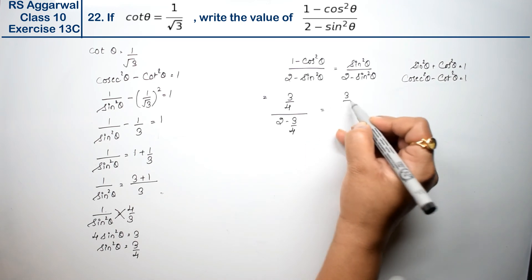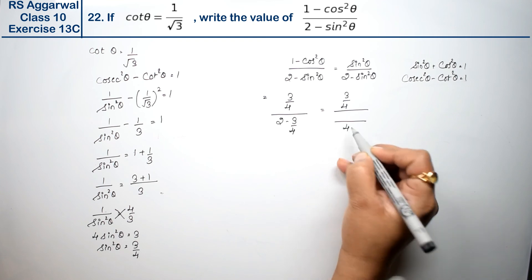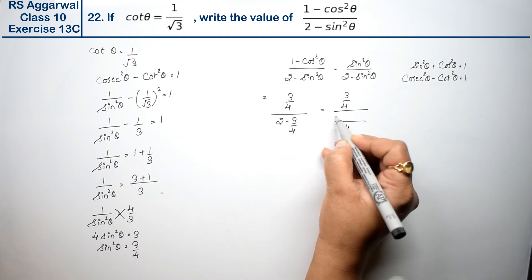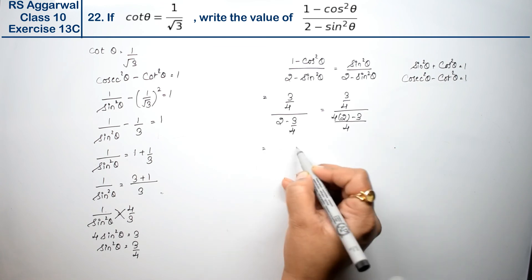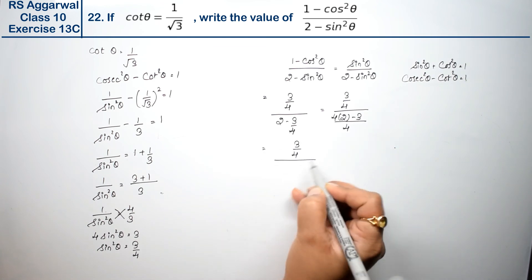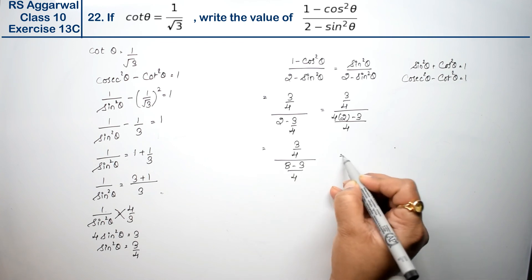3/4 as it is, divided by the LCM of 4. So 4 × 2 - 3. This is 3/4 as it is, divided by (8 - 3)/4. So this is how much?